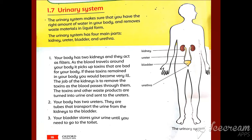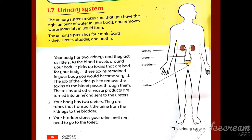The urinary system has four main parts. Number one is kidney, number two is ureter, number three is bladder, and number four is urethra. Repeat after me: kidney, ureter, bladder, and urethra.